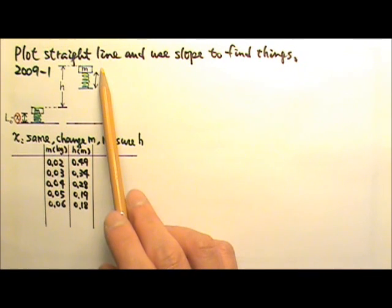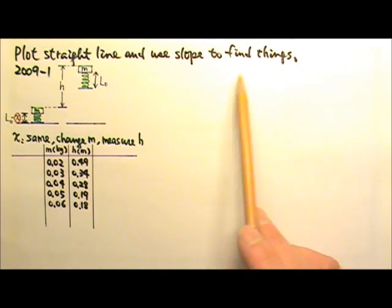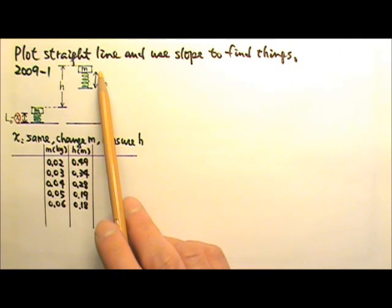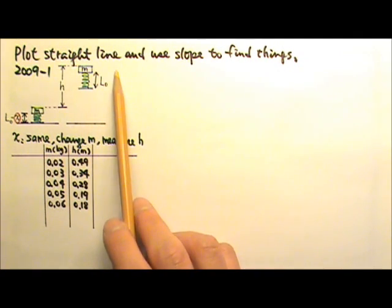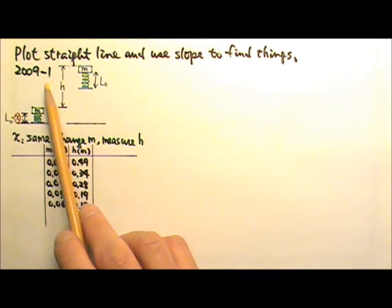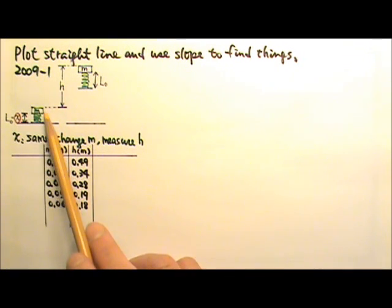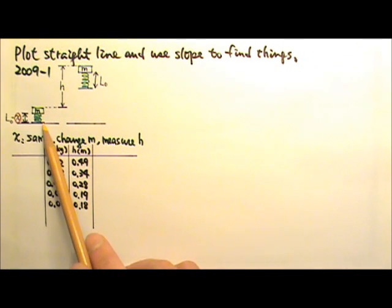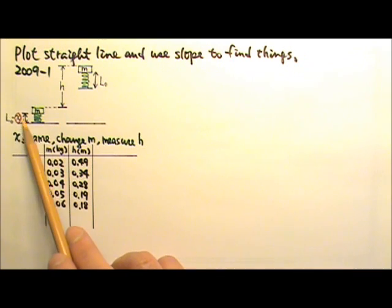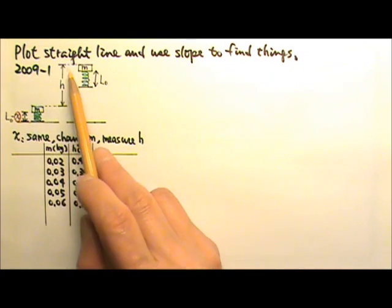Plot straight line and use slope to find things. Physicists often like to plot their experimental data into graphs with straight lines, and then use the slope of the line to find things. For example, in problem number 1 of the 2009 exam, a block of mass m attached to a spring is compressed by x and then let go.